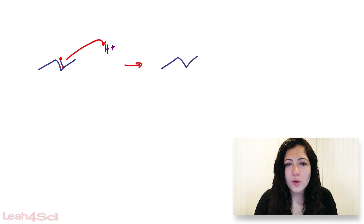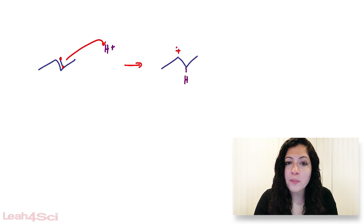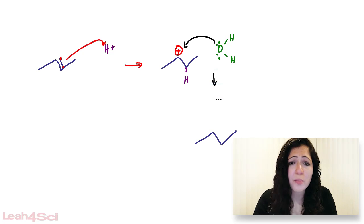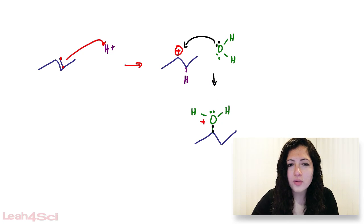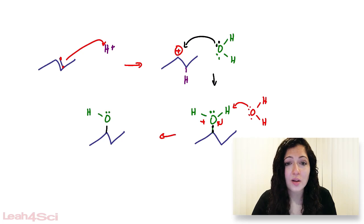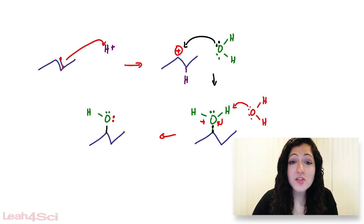Let's look at a simple example: the acid-catalyzed hydration of alkenes. If you just stare at the mechanism, you might get parts of it, but if your exam has something more complex — a different form of the alkene, maybe some branches or a ring — then are you comfortable that you'll know what to do? For a lot of students, not necessarily.